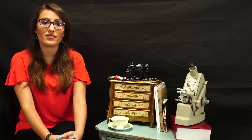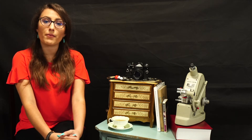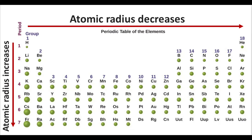At this point, we have talked about trends in atomic radii. As a brief summary, atomic radius increases as you move from top to bottom on the periodic table. As you move from left to right, it decreases due to effective nuclear charge.